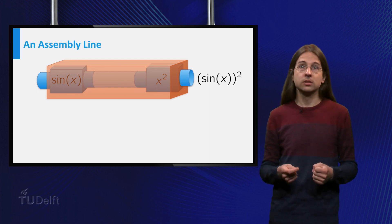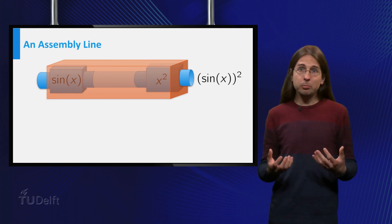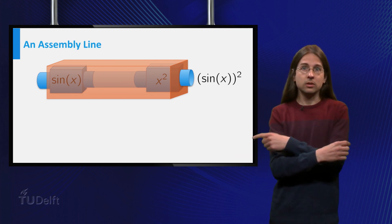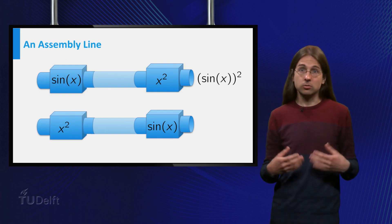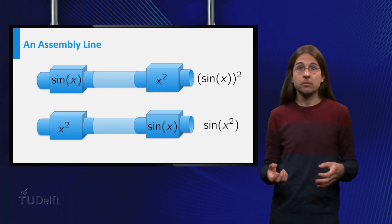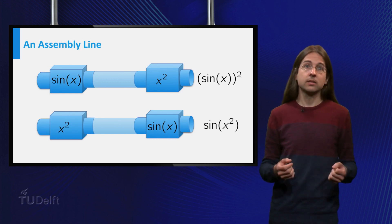with sine x, the leftmost function. If we had put the boxes in opposite order, we would have obtained x goes to x squared goes to sine of x squared, which is the composition of sine x with x squared.